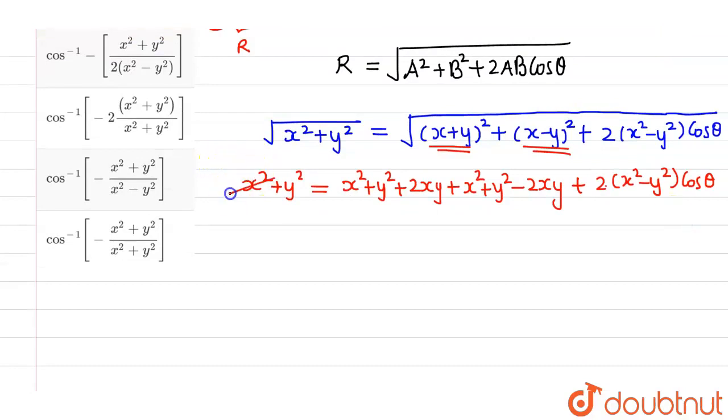Now again, this x²+y² will cancel out with this x²+y² and further, this 2xy will cancel out with this -2xy. So I will be left with 0 = x²+y² + 2(x²-y²) cos θ.